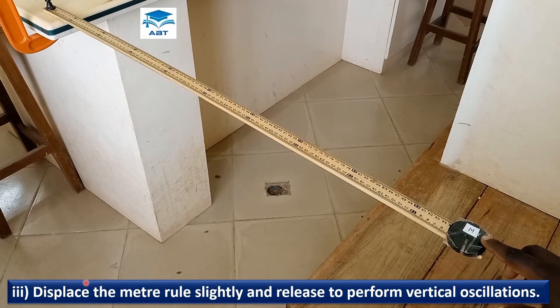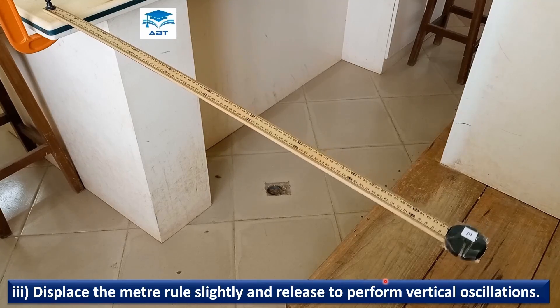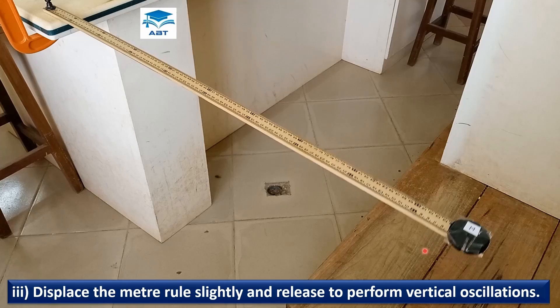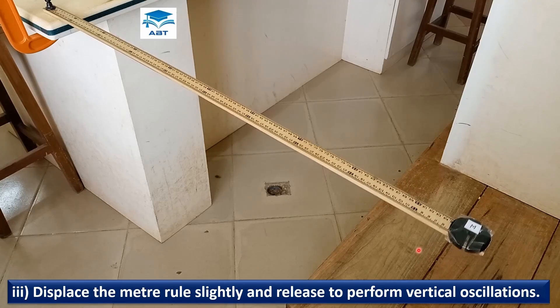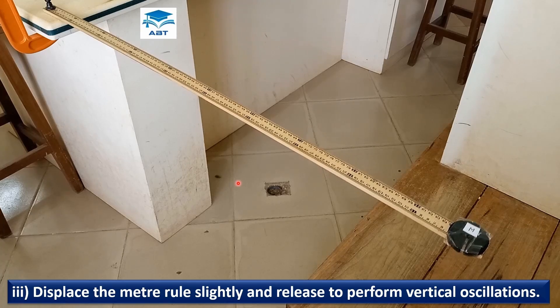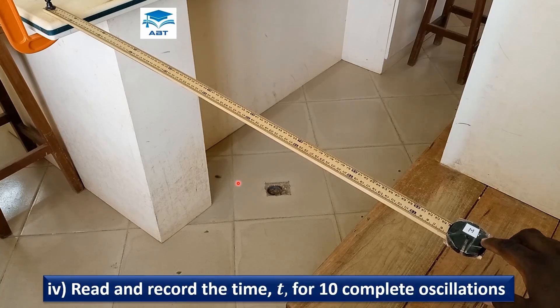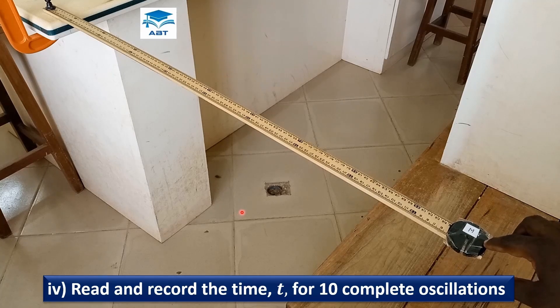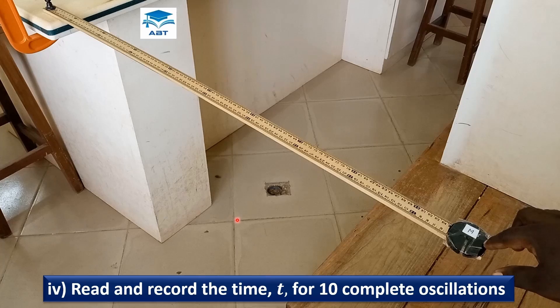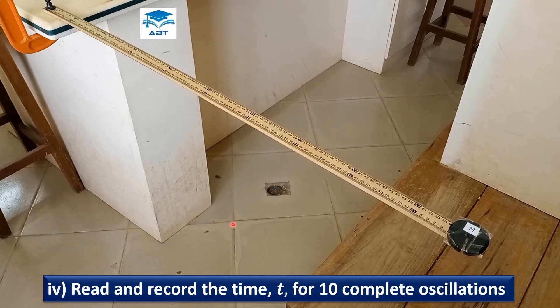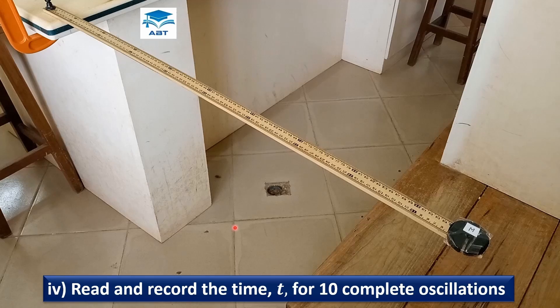Displace the meter rule slightly and release it to perform vertical oscillations like this. When the meter rule moves up and down, that's one oscillation, up and down, two oscillations, up and down, three oscillations in that order. We are going to count 10 complete oscillations.